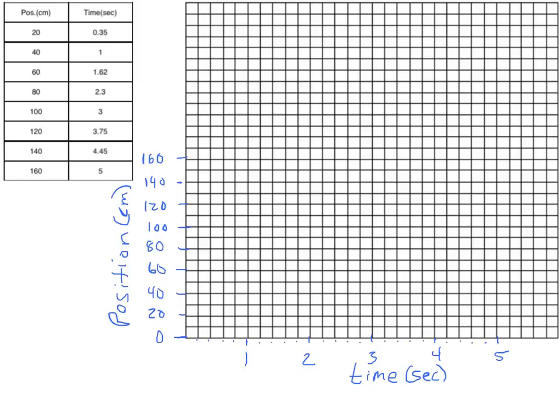Now we look at our data points and start plotting. At 20 centimeters of position we are at 0.35 seconds — just shy of the 0.4 mark. At 40 centimeters we are at 1 second. At 60 centimeters we are at 1.62 seconds, just past the 1.6 mark. At 80 centimeters we are at 2.3 seconds, halfway between the 0.2 and 0.4 marks on that interval. At 100 centimeters we are at 3 seconds even.